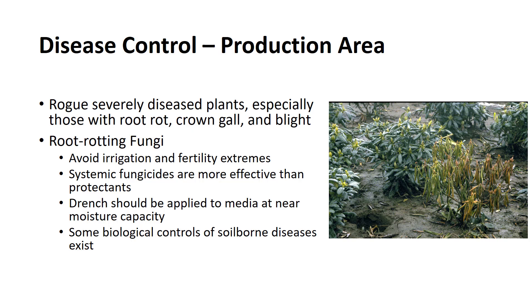Severely diseased plants should be rogued from the production site and appropriately discarded. Plants that must be rogued specifically are those with root rot, crown gall, and blight, especially since chemical controls for these diseases are unsatisfactory. Frequent and excessive irrigation will favor the continued reproduction and spread of fungal pathogens; therefore, proper water management must be recognized as an important facet of disease management. When root diseases exist, avoid water or fertility extremes, as both will place additional stress on an already weakened plant. Systemic fungicides are more effective than protectant fungicides. Drenched fungicides applied to soil to control root-rotting fungi should be deposited in and on the growing medium and not applied on foliage. If these products are applied through overhead irrigation, they should be washed off by additional water.